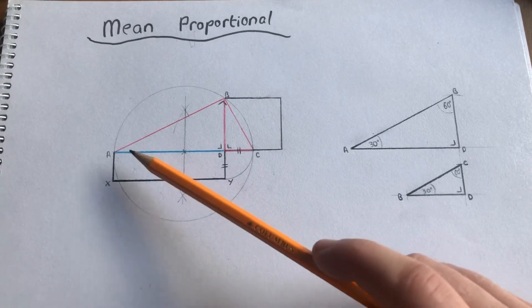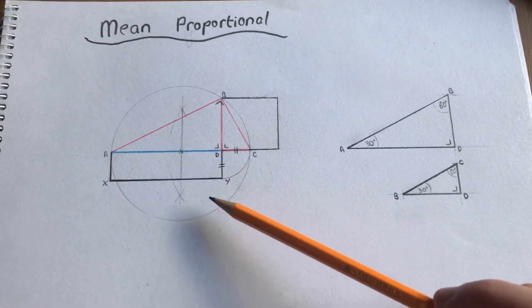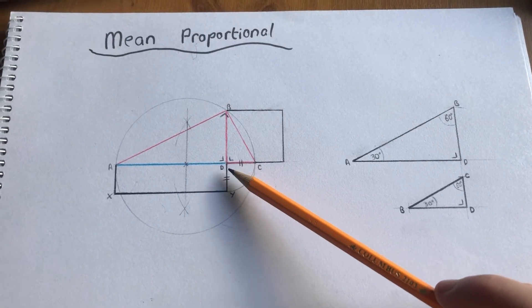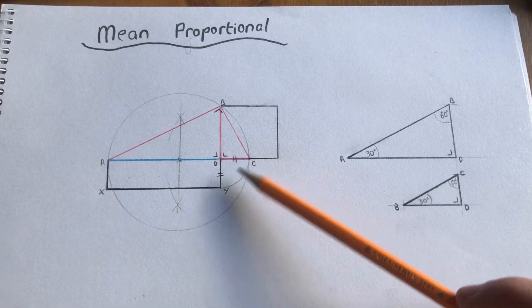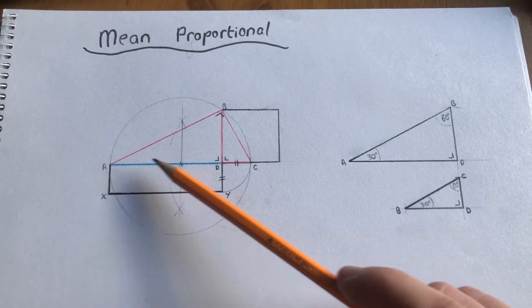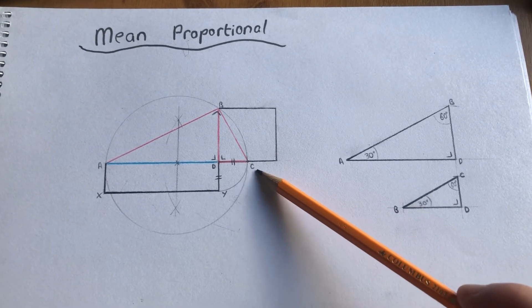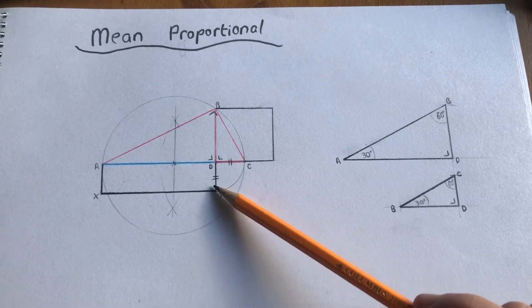We start with rectangle AXYD. First, we take the side DY and extend it with our compass. Then we extend the line AD, and where these two points meet is point C. As you can see, these two sides are the same.